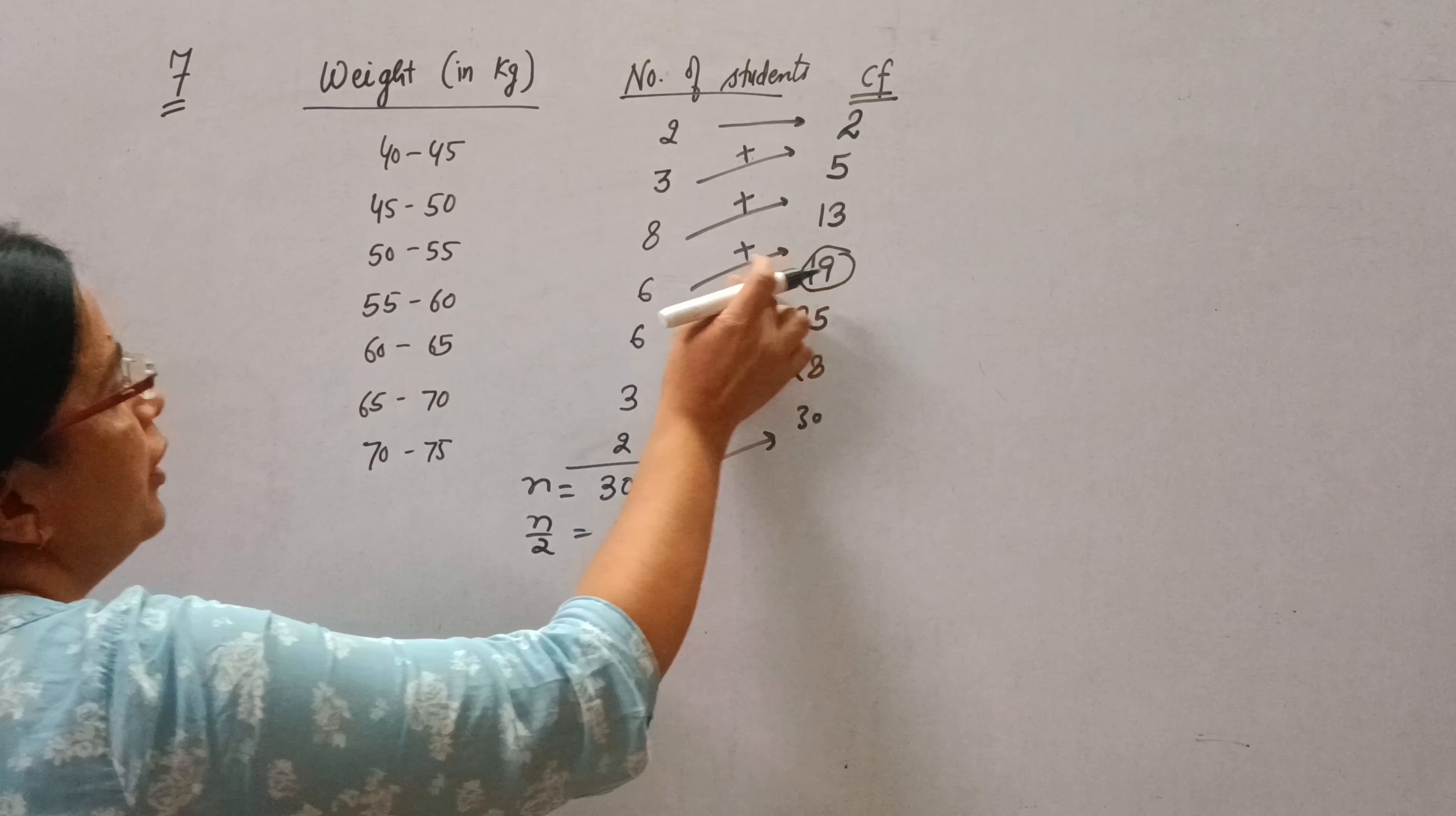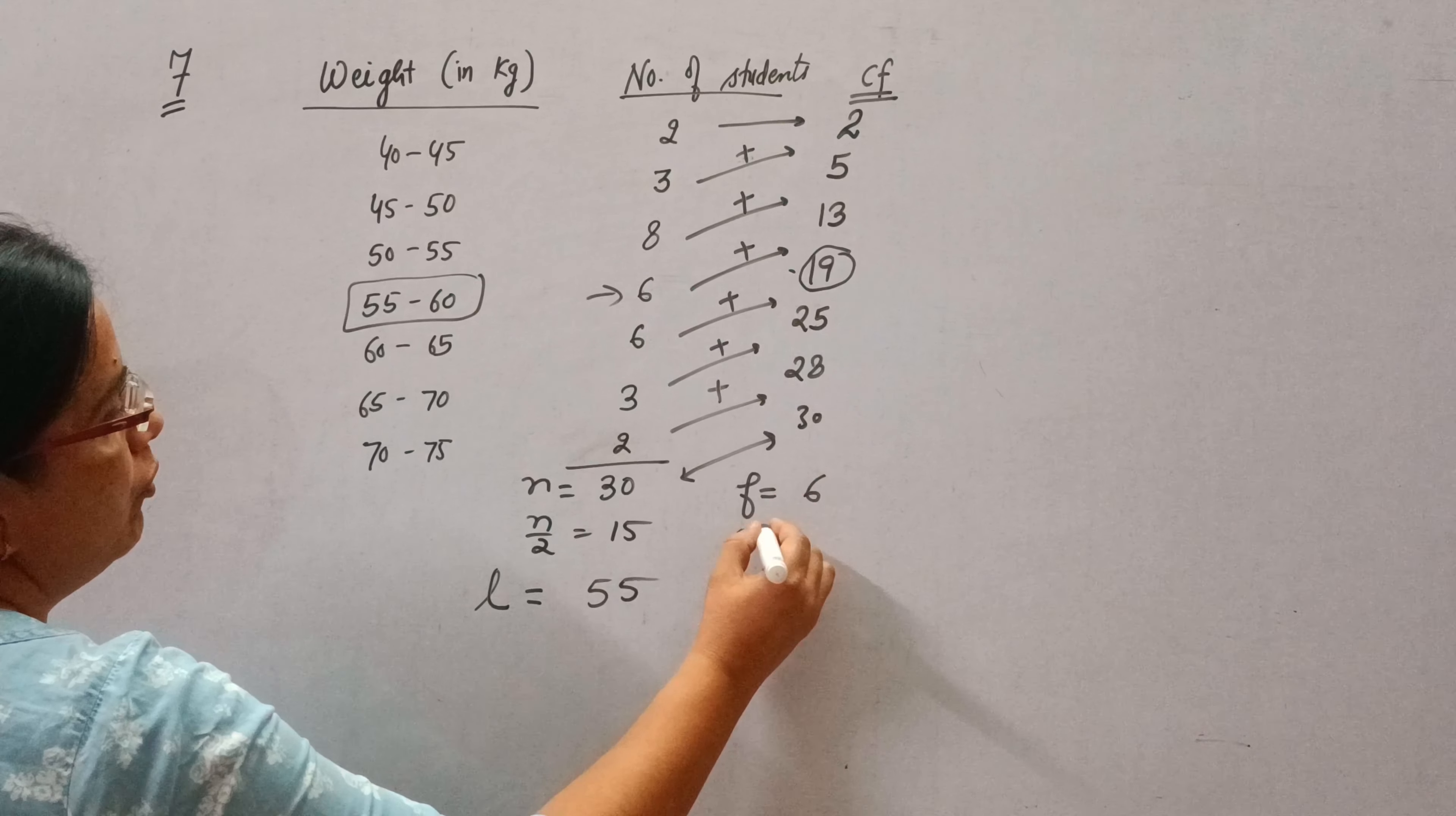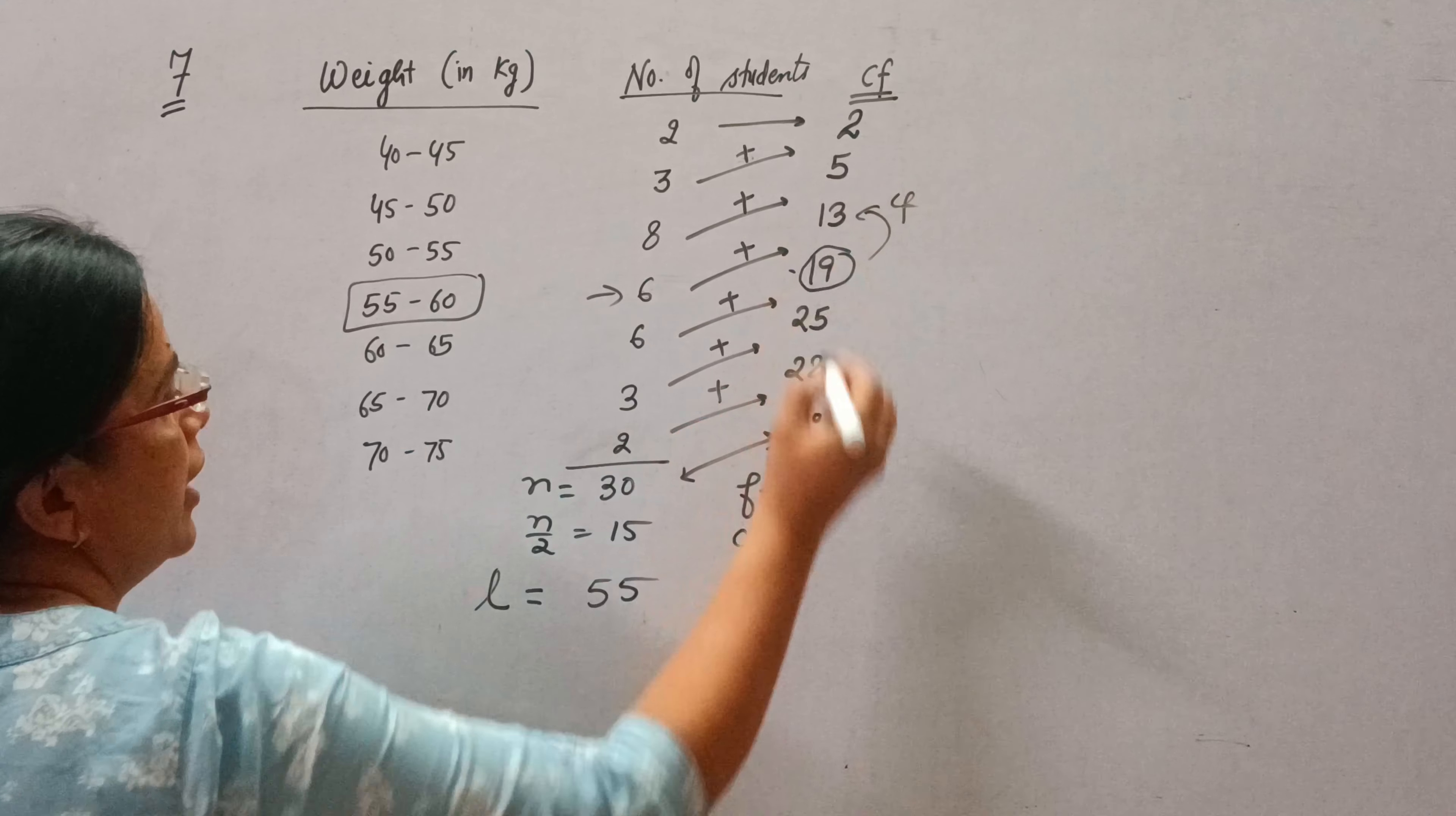So corresponding to 19, this is our median class and we need lower limit of the median class, that is 55. And we will take frequency of this median class as F, and we will take CF of the class preceding the median class, and that is 13.